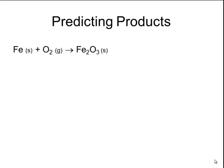The opposite of synthesis is decomposition. You can recognize a decomposition reaction easily because it normally starts with only one compound on the reactant side. For example, silver oxide is heated, and that silver oxide will break down into silver metal and oxygen gas.